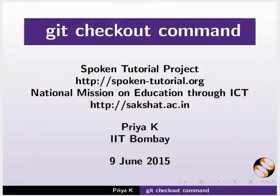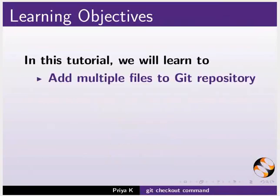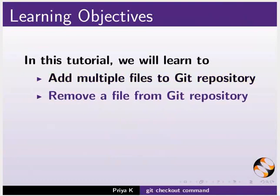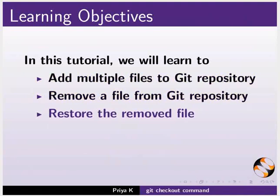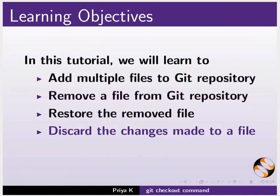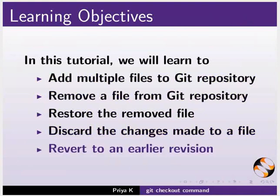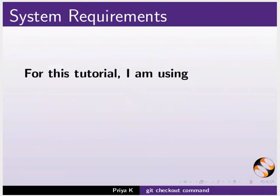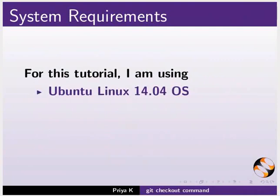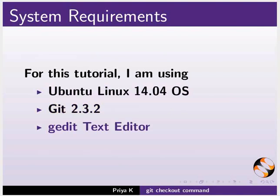Welcome to the spoken tutorial on the git checkout command. In this tutorial we will learn how to add multiple files to a git repository, remove a file from a git repository, restore the removed file, discard the changes made to a file, and revert to an earlier revision. For this tutorial I am using Ubuntu Linux 14.04, git 2.3.2, and the gedit text editor.